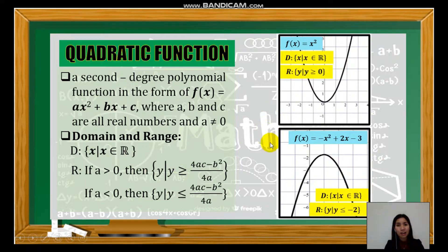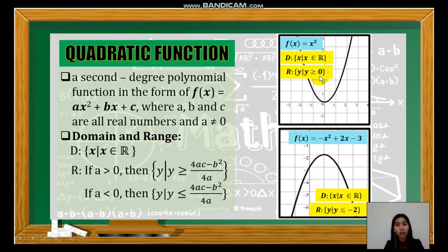The graph of a quadratic function is called a parabola. The first parabola opens upward because the value of a is positive, and the lowest point is 0, so the range is y ≥ 0. The second example has a negative value of a, so the opening is downward. Locate the vertex, which is at negative 2, meaning the values of y are all from negative 2 downward. So the range is y ≤ −2.